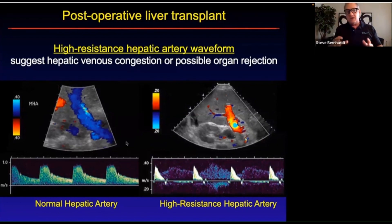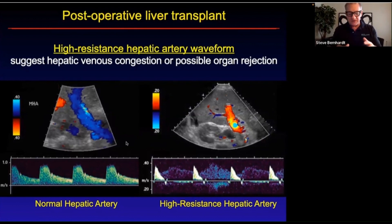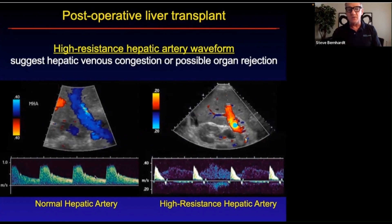It probably reflects organ congestion because when they take the liver from the recipient and give it to the donor, it becomes somewhat edematous. When you hook the arteries and veins up, they have resistance going into the organ. But as far as the liver goes, it doesn't suggest organ rejection. Based on surgical techniques, I've seen that following certain surgeons, it commonly looks highly resistive right out of the day of surgery. You'll follow it up, and as time goes by, that high resistance artery — like the picture on the right — will end up looking like the picture on the left, more of a low resistance waveform over time.